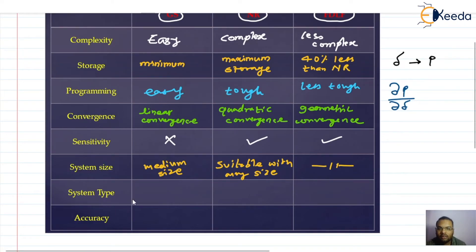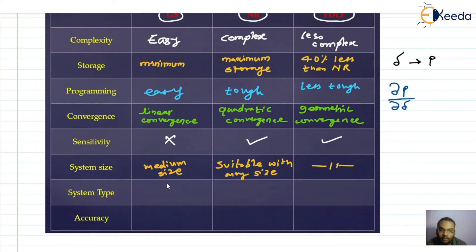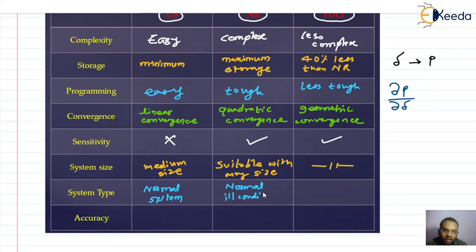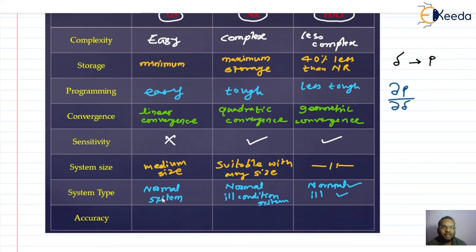Next is system type — whether the system is operating under normal or ill-conditioned conditions. The Gauss-Seidel method is suitable only for normal systems. Newton-Raphson and the fast decoupled load flow method are both suitable for normal as well as ill-conditioned systems. Gauss-Seidel should not be used for ill-conditioned systems.